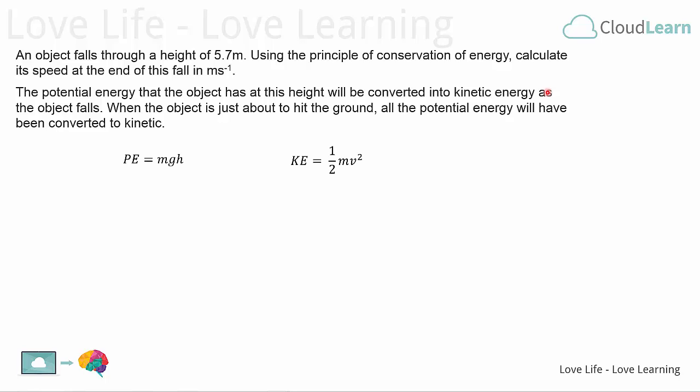We can use that by having a look at the two equations for potential energy and kinetic energy. First of all potential energy is equal to the mass times the acceleration due to gravity times the height that it's falling from, PE = mgh. The kinetic energy that it has at the end of its fall will be equal to half of the mass of the object times its speed squared, KE = 1/2 mv². Now it's the speed that we're looking for.